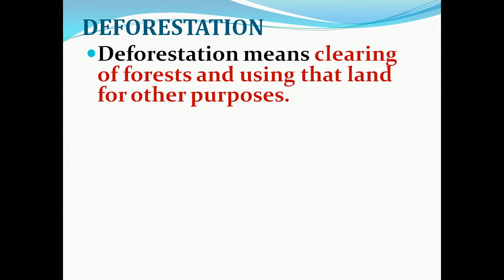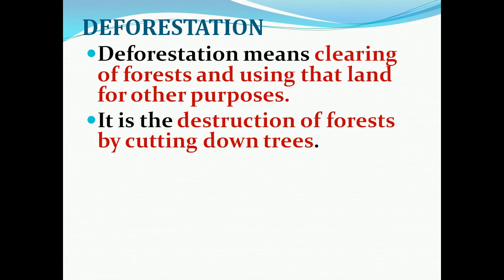Now we are going to see briefly what are the causes of deforestation and what are the harmful effects led by deforestation for the survival of living organisms. Deforestation means the clearing of forest and using that land for other purposes. Humans are cutting trees in the forest and using the forest land for other purposes such as constructing dams, roads, or several other purposes. Deforestation is also defined as destruction of forest by cutting down trees.